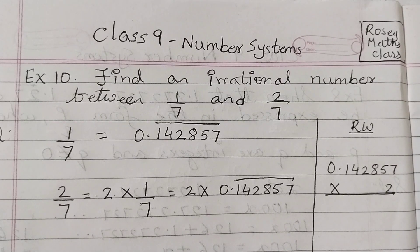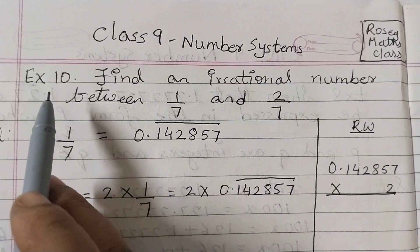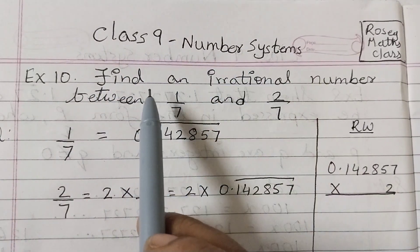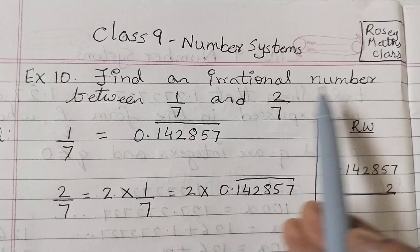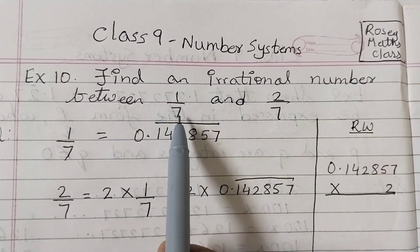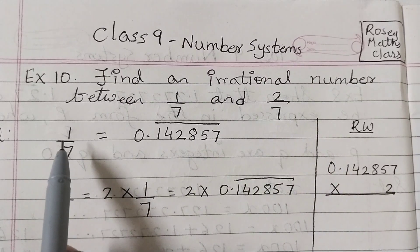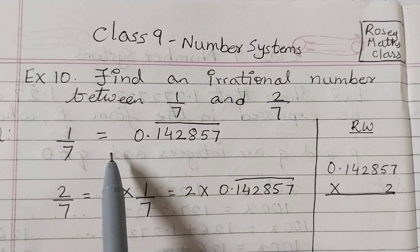Hello students, in this video we shall discuss example number 10 of class 9 chapter 1 number systems. Find an irrational number between 1 by 7 and 2 by 7. So we know that 1 by 7 is equal to